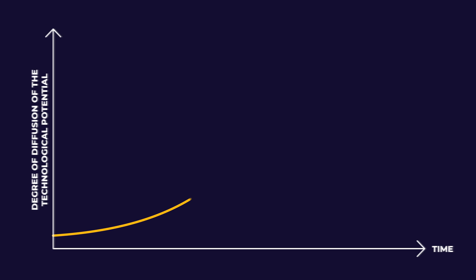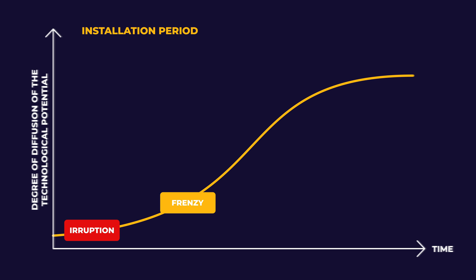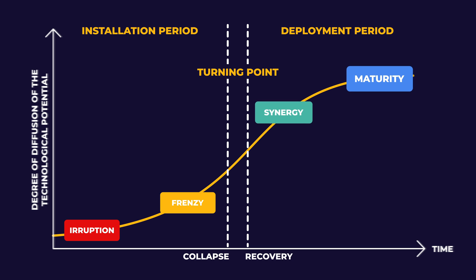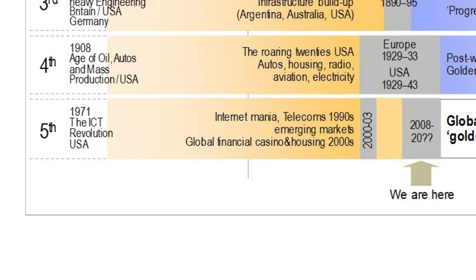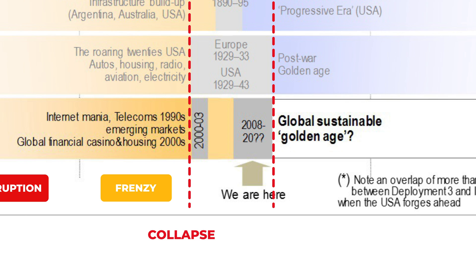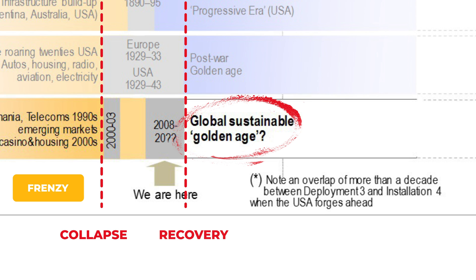Each of these revolutions followed three similar phases. First, the installation — with an eruption and frenzy phase where financial markets fell into a bubble. This was followed by the turning point: the crash and recession. Third is the deployment, with synergy and maturity — a golden age. If the pattern continues, the model states we've already been through the installation, eruption, and frenzy phases. We've had our recession with the crashes of 2000 and 2008. The question is whether we can now enter the golden age of deployment, which will probably happen once social, economic, and environmental incentives start to align.